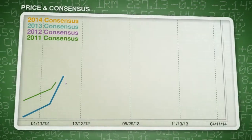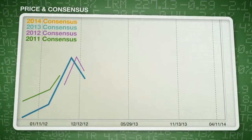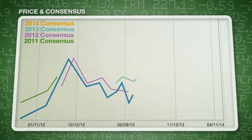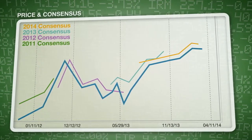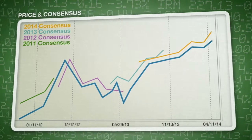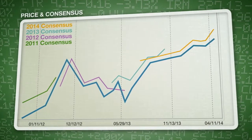You can also see the consensus trend visually displayed in our price and consensus chart. This lets you see at a glance which way the consensus is heading and the relationship between it and the stock price. You want to look for stocks whose consensus is rising, and preferably at a steeper angle than the period that preceded it.